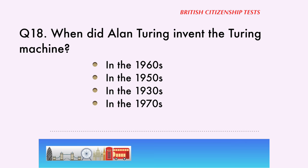Question 18. When did Alan Turing invent the Turing machine? In the 1960s, in the 1950s, in the 1930s, in the 1970s.